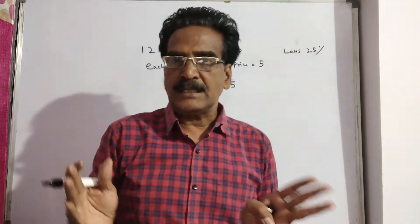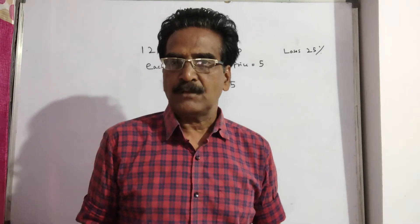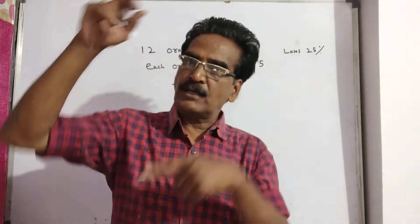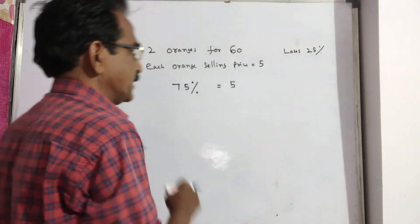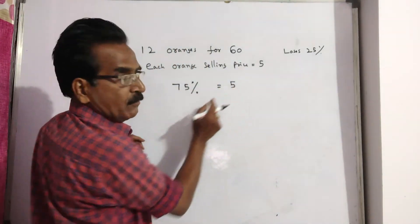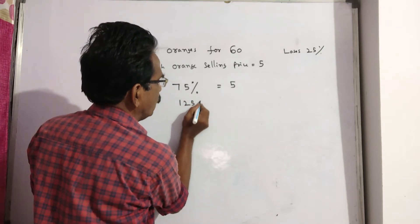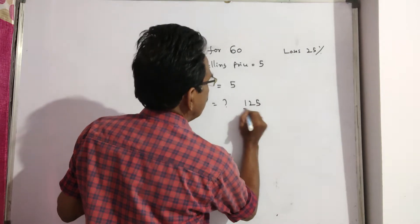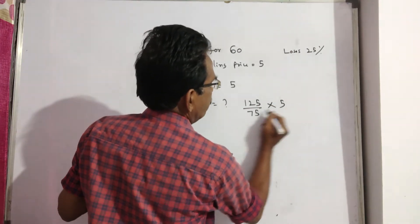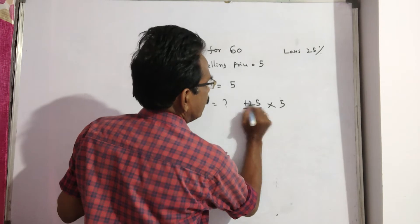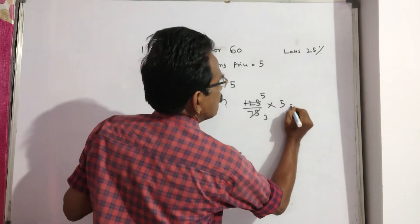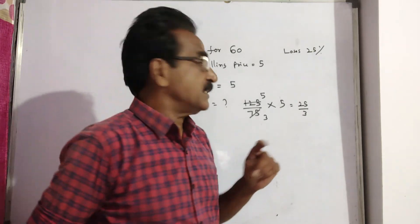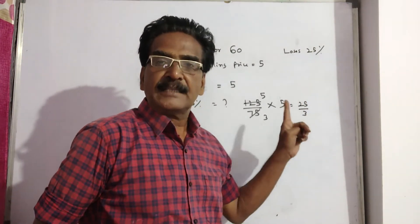Now we want 25 percent profit, so we have to sell each orange at 125 percent of the cost price. If 75 percent equals 5, then 125 percent equals 125/75 × 5, which gives us 25/3. So you have to sell each orange at rupees 25/3.